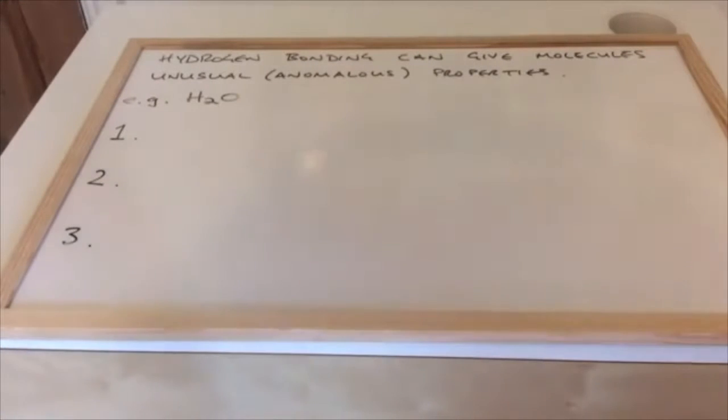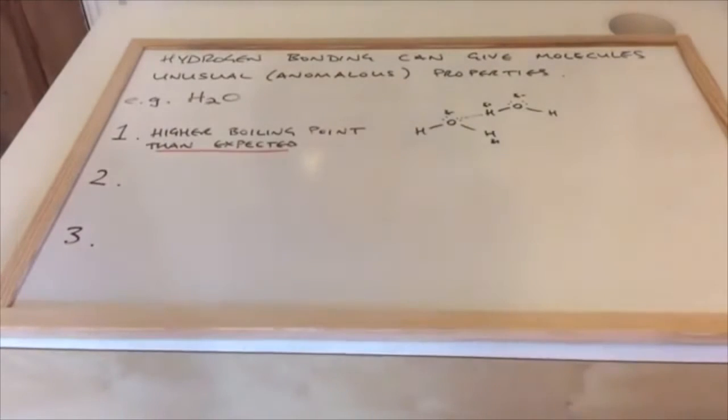The first one is it has an unusually high boiling point, or a high boiling point than expected. You can't just say water has a high boiling point; you have to say it's higher than expected. So very simply, there's two water molecules drawn. To overcome the attraction between the molecules, in other words to overcome